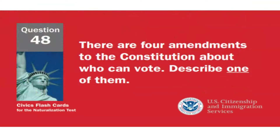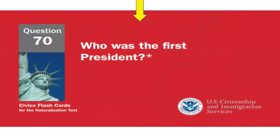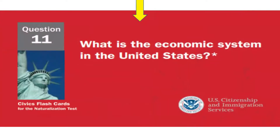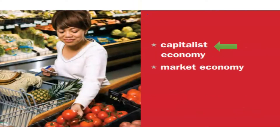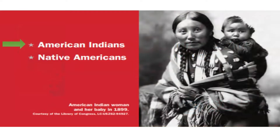435. There are four amendments to the Constitution about who can vote — describe one of them. Any citizen can vote. Who was the first president? George Washington. What is the economic system in the United States? Capitalist economy. Who lived in America before the Europeans arrived? American Indians.